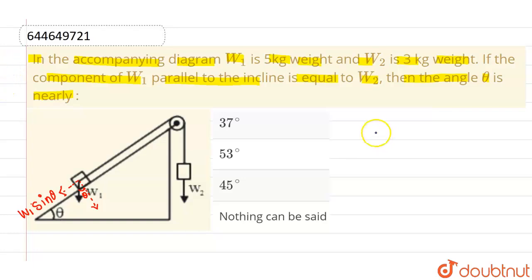So what I can write is W1 sin theta equals to W2. And what is the value of W1? This is 5 kg weight, so this can be written as 5 into acceleration due to gravity into sin theta equals to W2, which is 3 kg weight, which can be written as 3 into acceleration due to gravity.